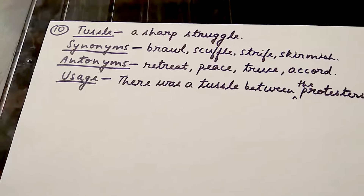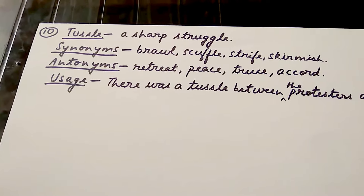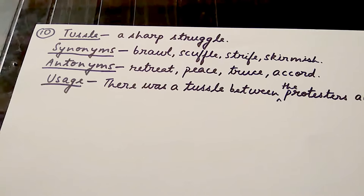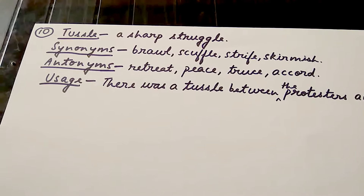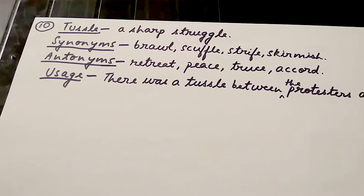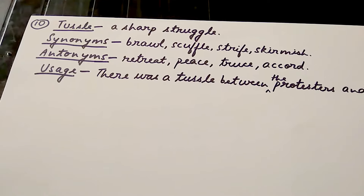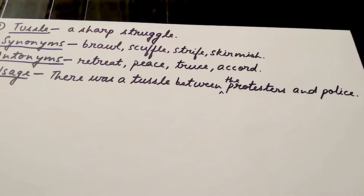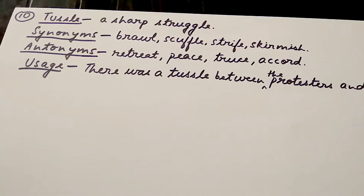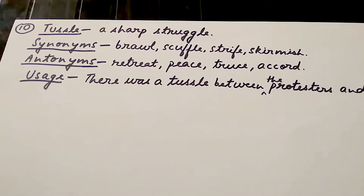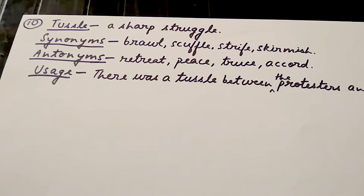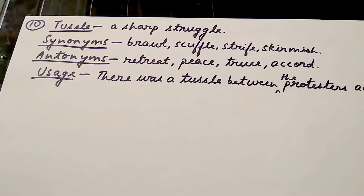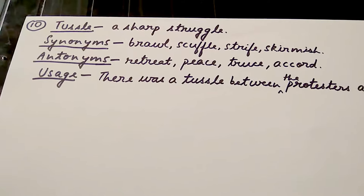The next word is 'tussle', which means a sharp struggle. Its synonyms are 'brawl', 'scuffle', 'strife', and 'skirmish'. Its antonyms are 'retreat', 'peace', 'truce', and 'accord'. Usage: 'There was a tussle between protesters and the police.' Trick: relate 'tussle' to 'muscles' — only someone with good muscles will be involved in a tussle; someone who is not healthy cannot get involved in a tussle.